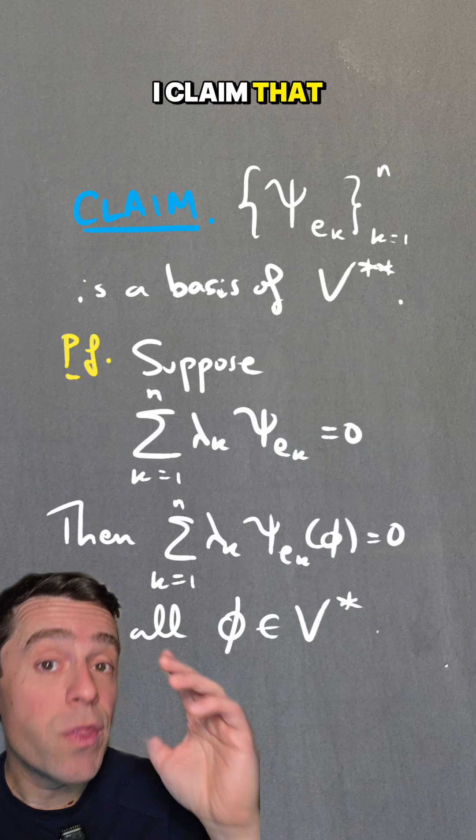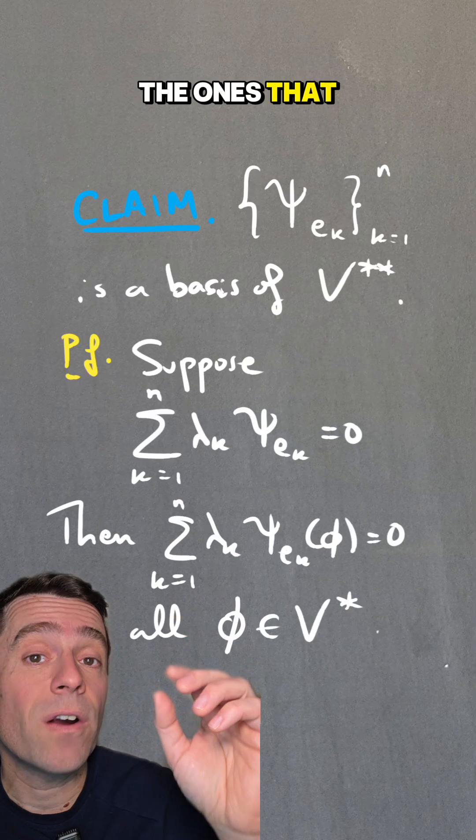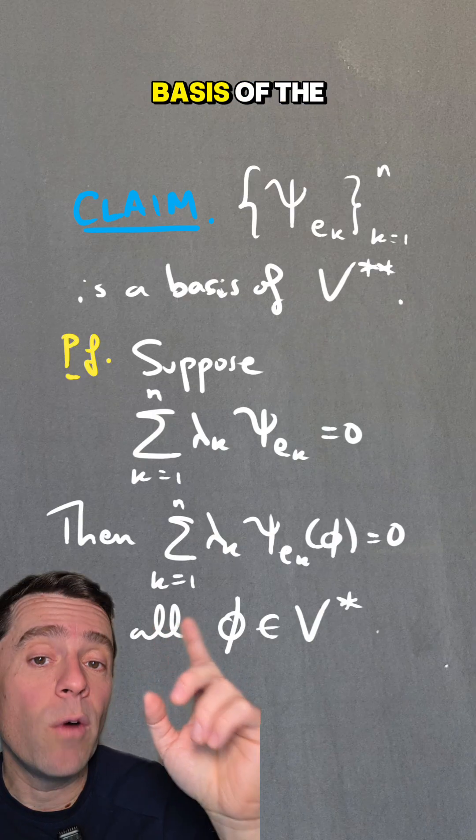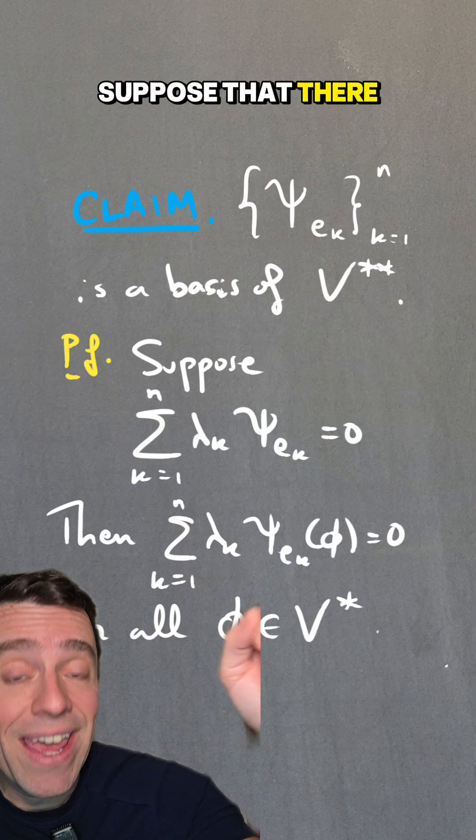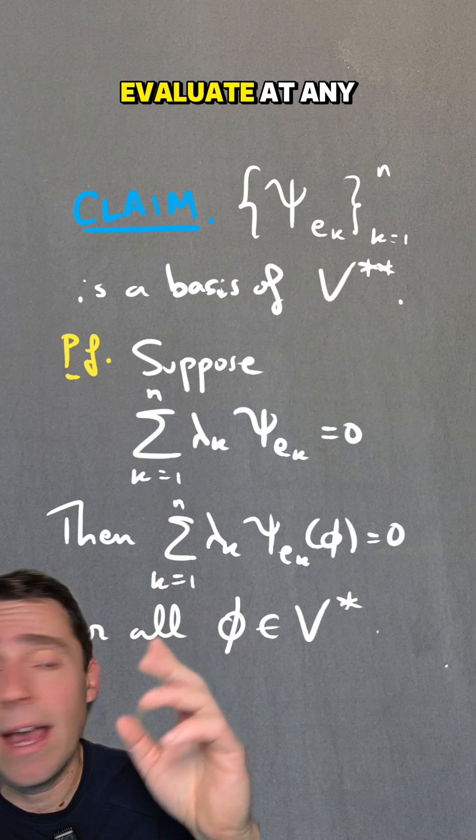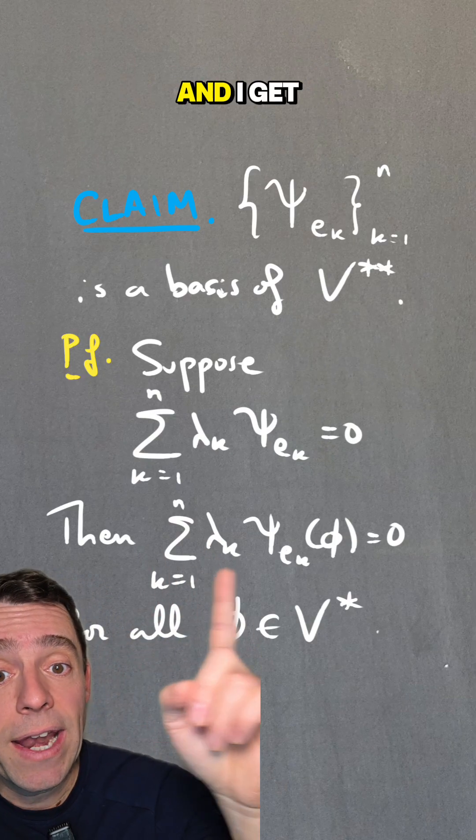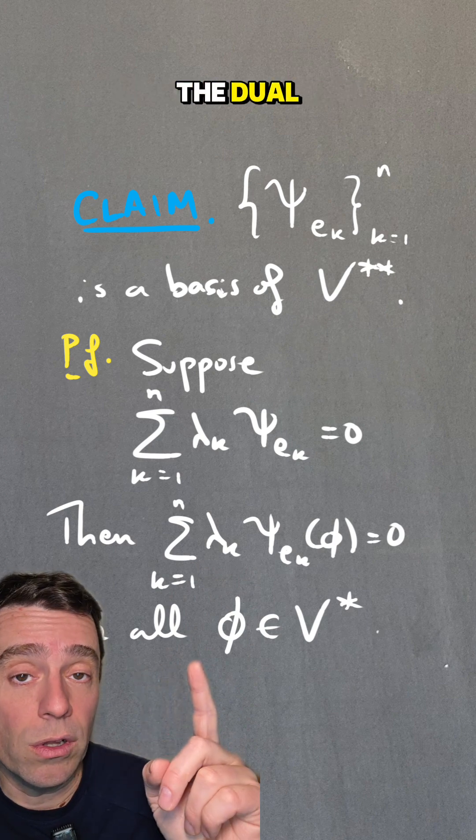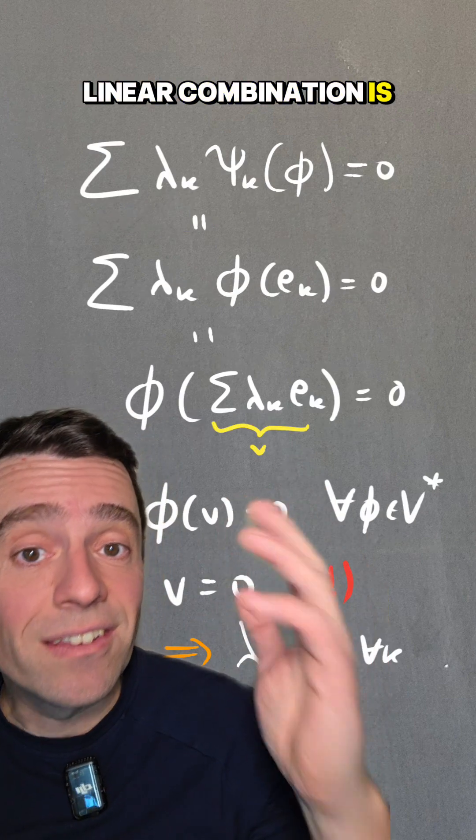Now, I claim that those maps, the ones that are just evaluating at basis elements, are actually a basis of the double dual. For, suppose that there is a linear dependence between them, then I can evaluate at any φ, and I get this equality for any φ in the dual. And if that linear combination is zero,